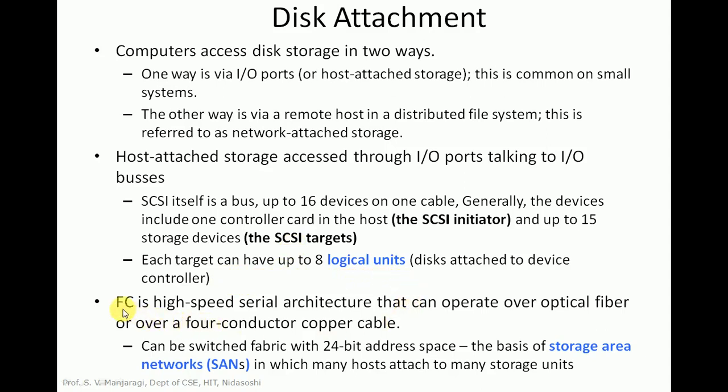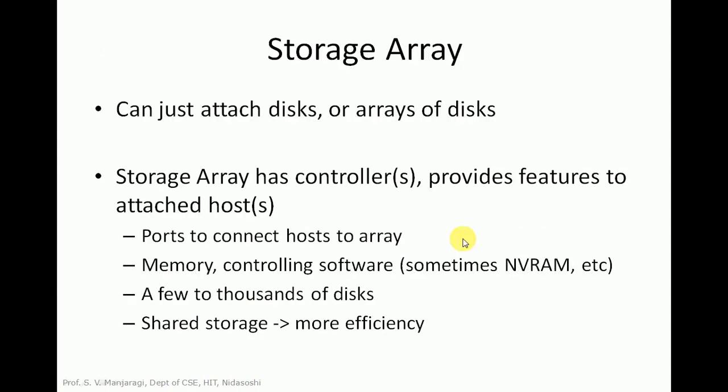Fiber channel (FC) is a high-speed serial architecture that can operate over optical fiber or over a 4-conductor copper cable. It can be switched as a fabric with a 24-bit address. If you want larger storage capacity, you can have an array of storage disks — a number of disks interconnected in the form of an array — called a storage array. The purpose of a storage array is to get a large amount of storage capacity.